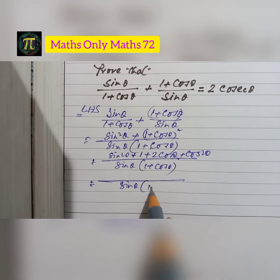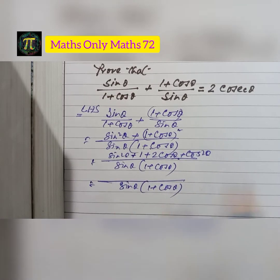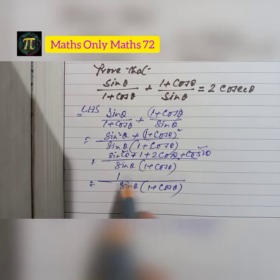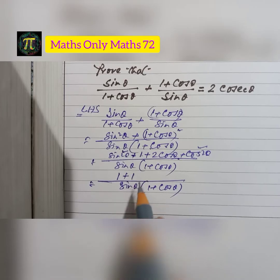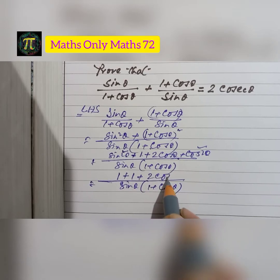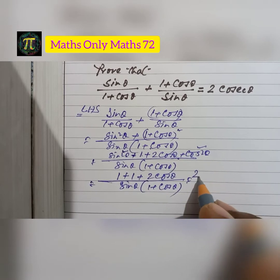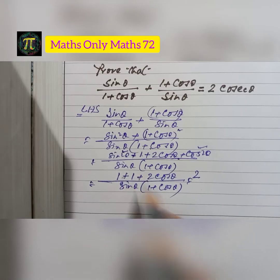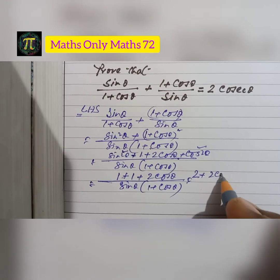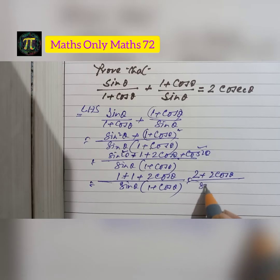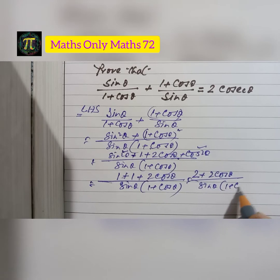The denominator is sin θ × (1 + cos θ). In the numerator, sin²θ + cos²θ equals 1, so we get 1 + 1 + 2 cos θ, which gives 2 + 2 cos θ. So the expression becomes (2 + 2 cos θ) / (sin θ × (1 + cos θ)).